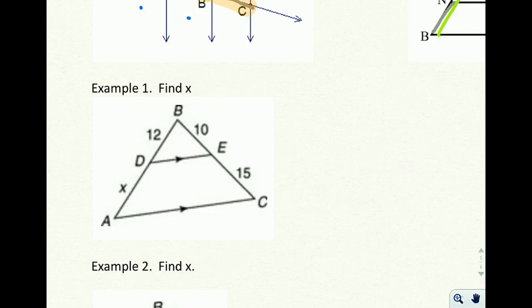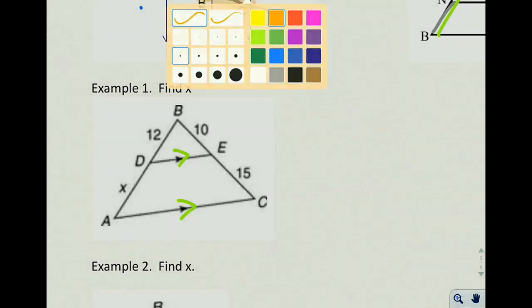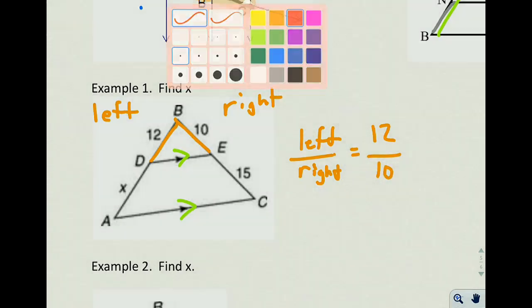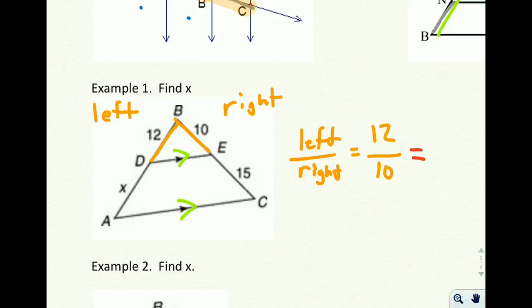So in this first example, we're asked to find x. And we have these two parallel lines coming across right here. So what that means for us is that this piece of 12, this time let's do left over right, just to change it up. So left, right, and I'm going to do left over right. And left over right is going to be 12 over 10. And that's going to be equal to left over right, x over 15.